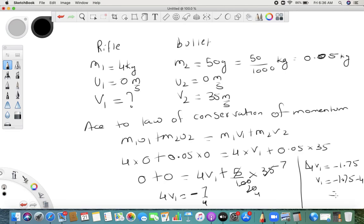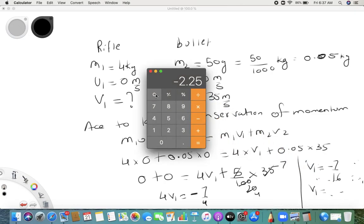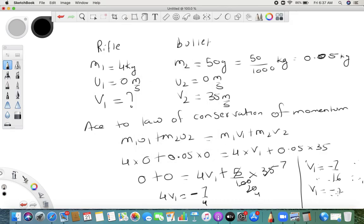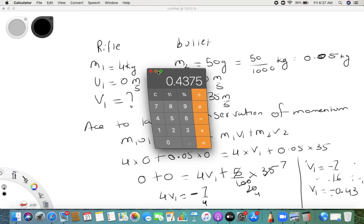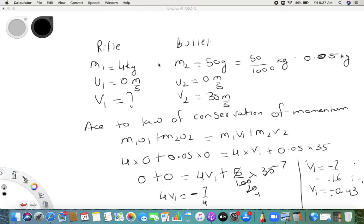Oh wait, sorry, not like this. So we get v1 is equal to minus 7 upon 16. That is v1 equals 7 divided by 16, which gives minus 0.43. That is how you will get the recoil velocity.